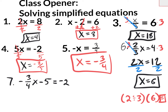Finally, number 7 is a multi-step problem. What do I do first? Get rid of the plus 5 — that's the easiest. What you do to one side, do to the other side. You're going to add 5 to the negative 2. So what I have left is negative 3 fourths x equals 3.